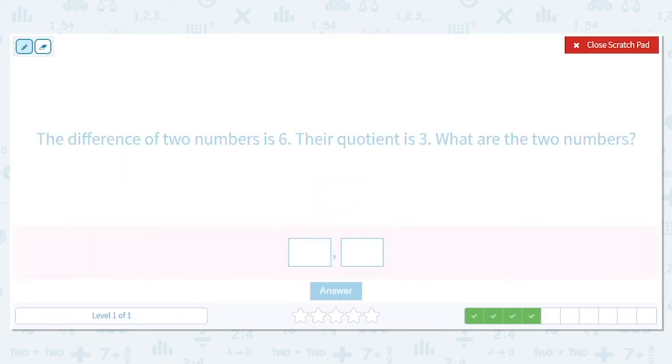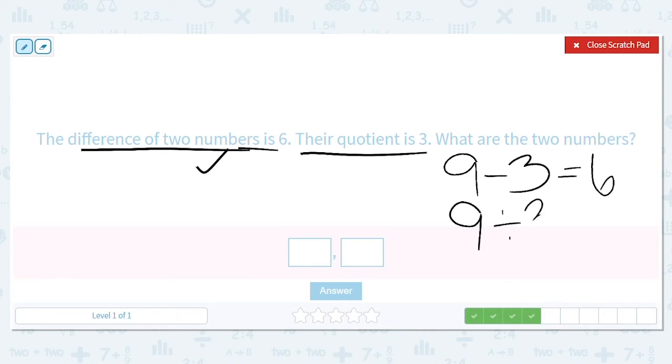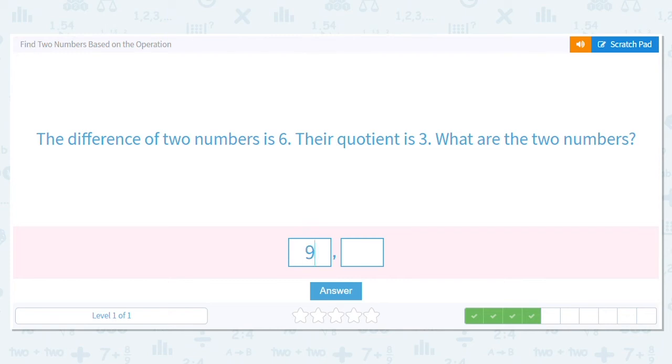Okay, the difference of two numbers is 6, but when you divide them, their quotient is 3. Interesting. What if I do 9 minus 3? What's 9 minus 3? That's 6, so that checks out for my first one. And I do 9 divided by 3. What's 9 divided by 3? 3. So 9 and 3 are my numbers.